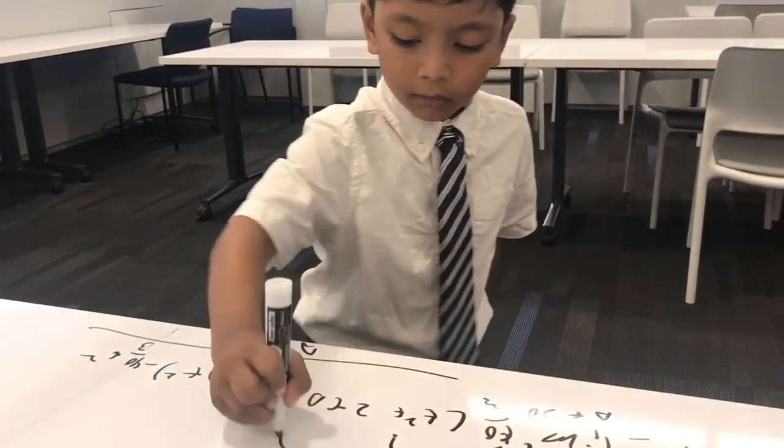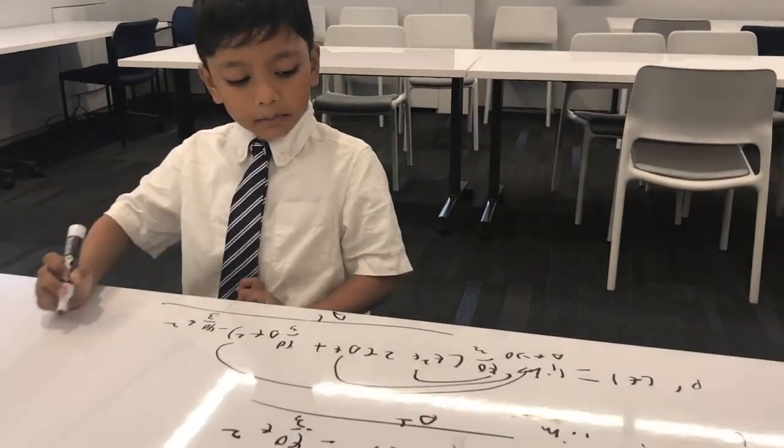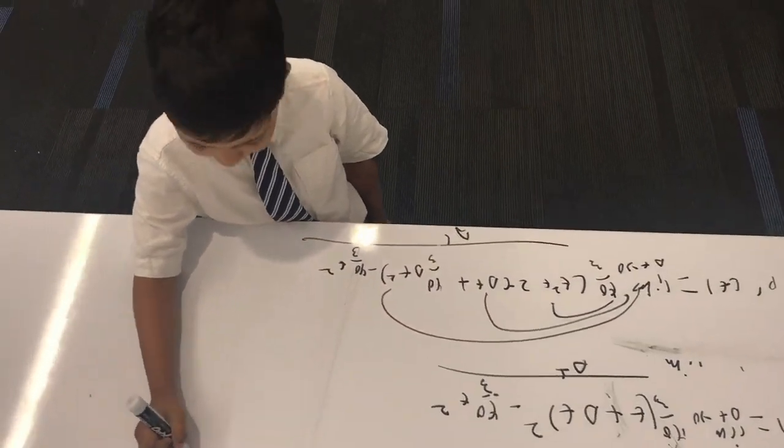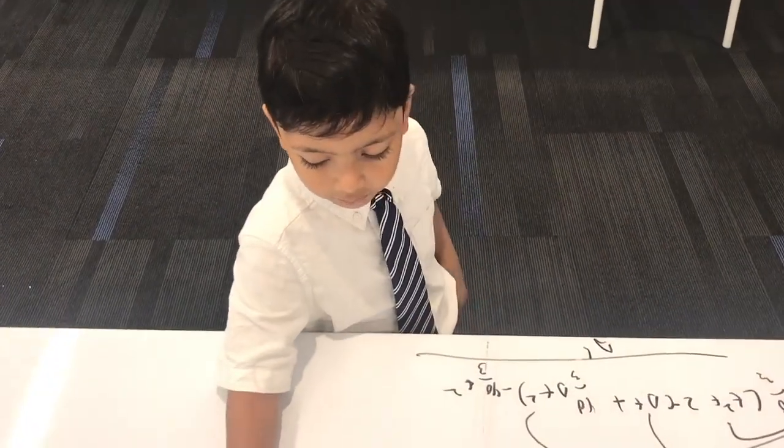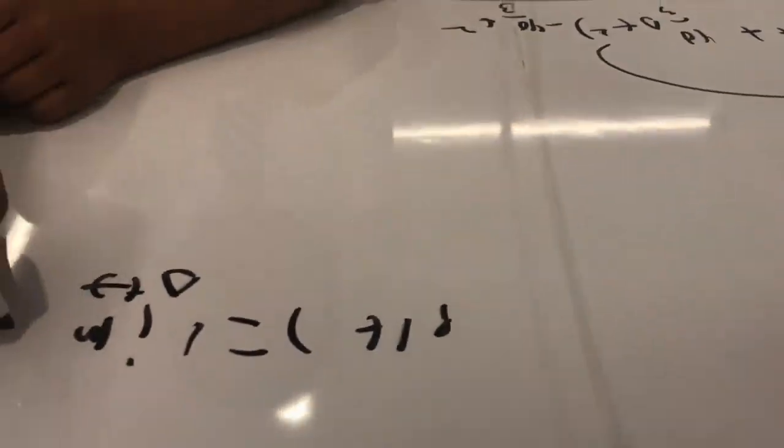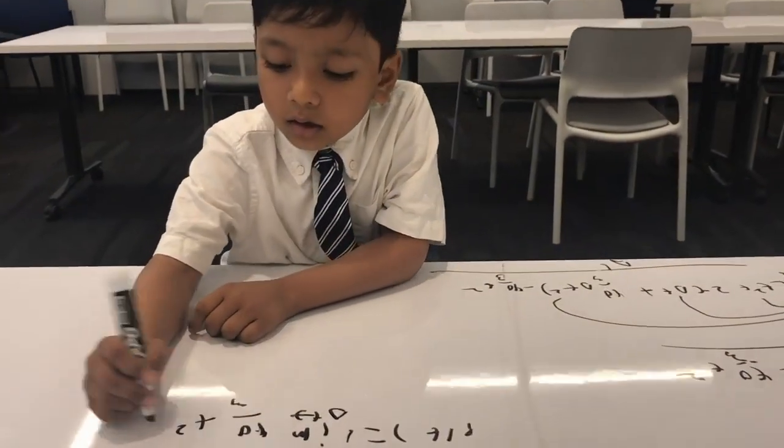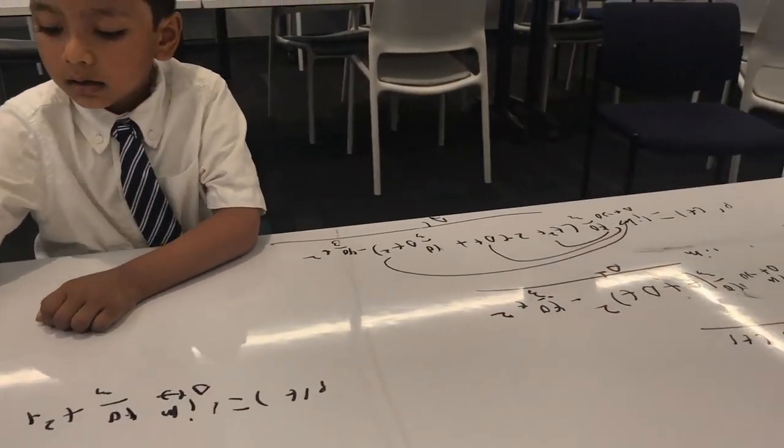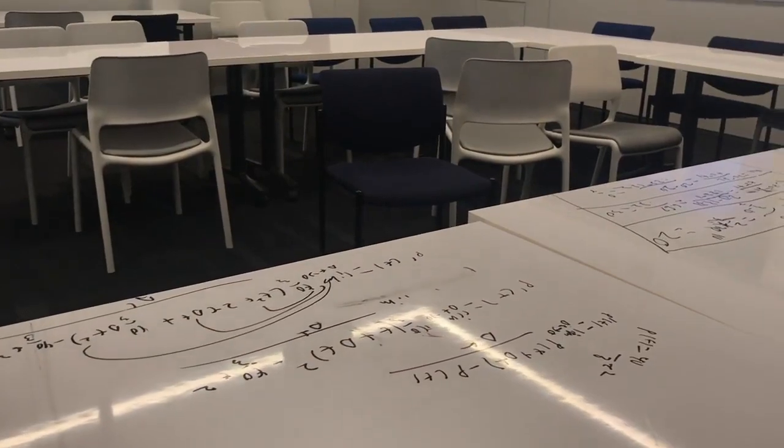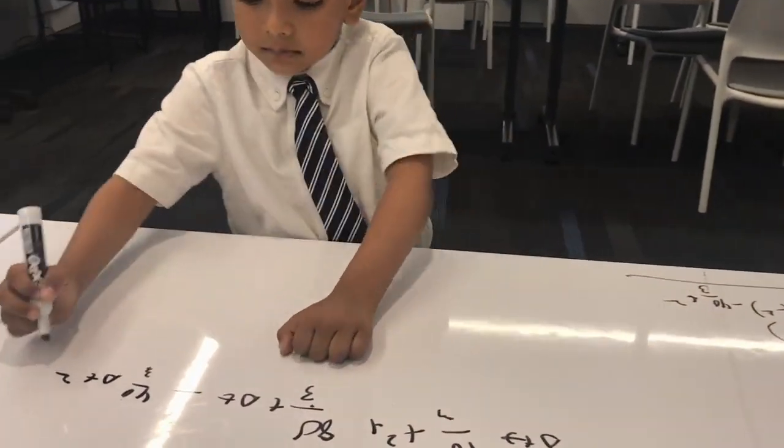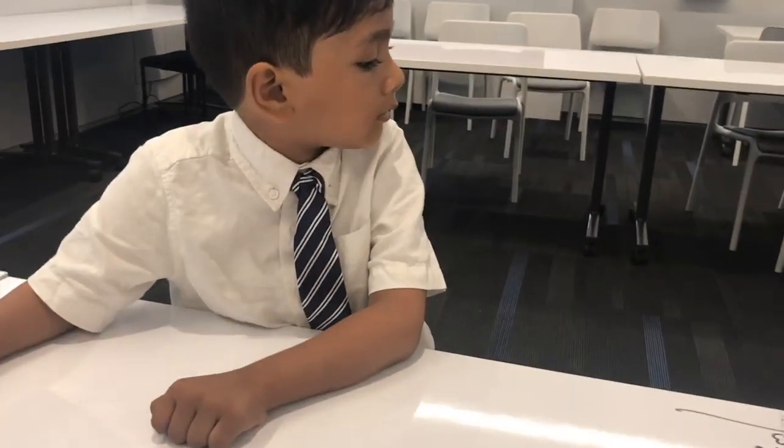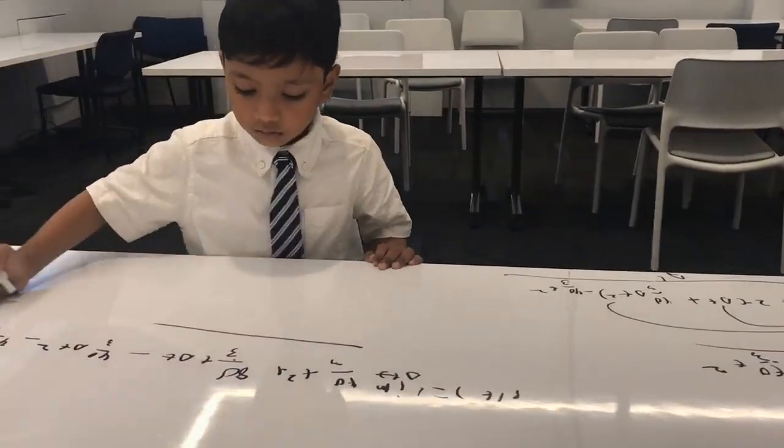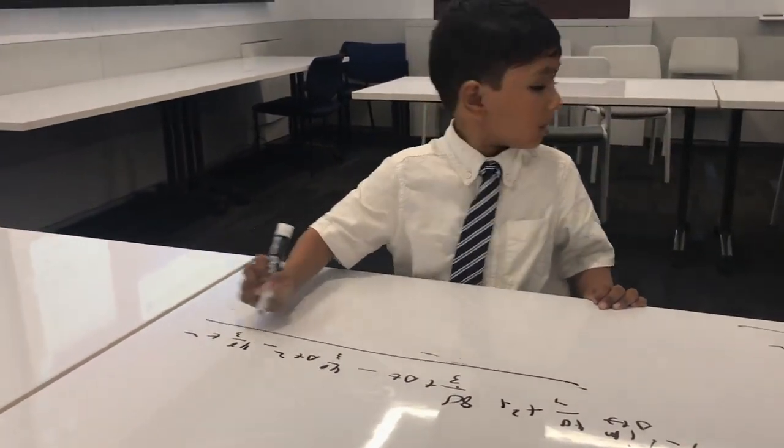So that means we distribute to everything, so that P of T is equal to limit delta T goes to 0, that's 40 over 3 T squared plus 80 over 3 T delta T minus 40 over 3 delta T squared minus 40 over 3 T squared minus 40 over 3 T squared over delta T.